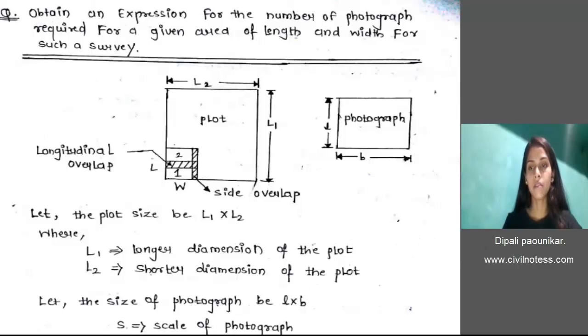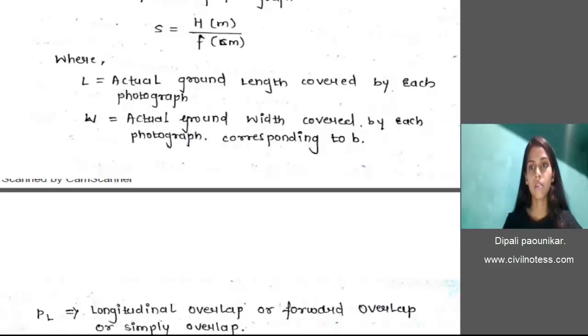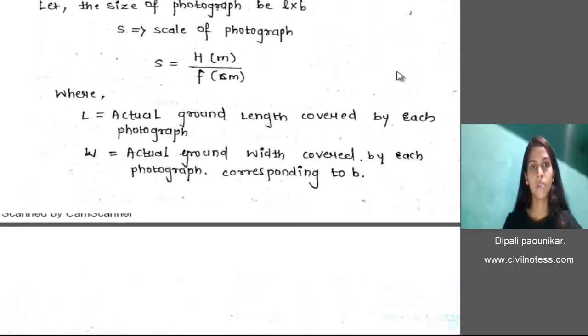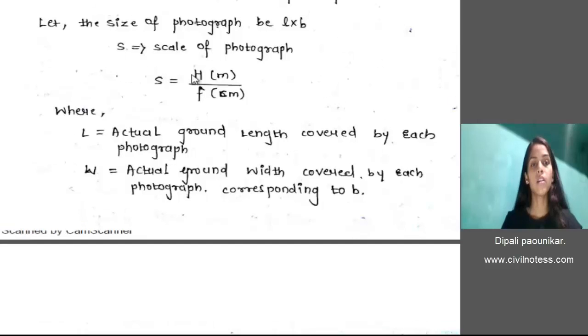The scale of photograph is calculated by the formula: S equals H in meters upon F, where F is the focal length in centimeters.